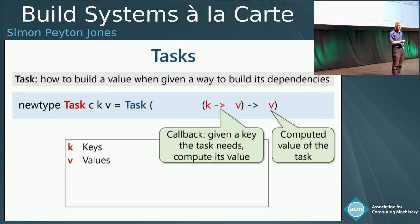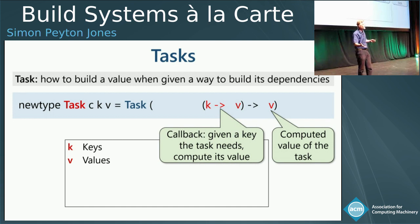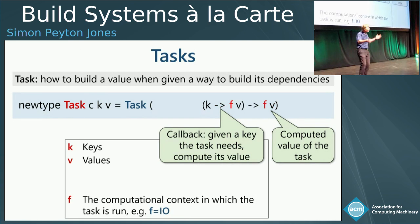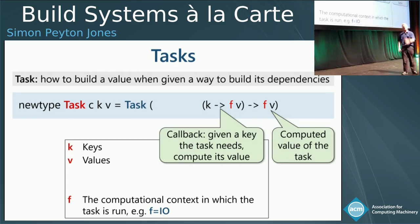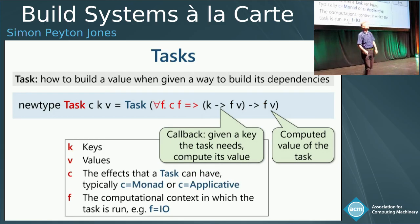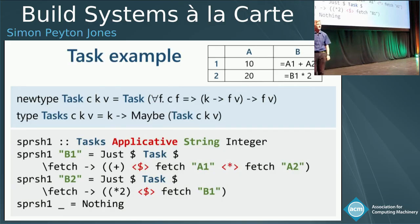What is a task? This is where things get interesting. A task is a function that produces a value — that's the arrow v part — but in doing so it needs the value of its dependencies. So it needs some kind of k-to-v function, a callback it can use to get the values of its dependencies. But that callback has to be somehow stateful, because fetching the value of another key may require work to bring it up to date — an effectful thing that needs to be recorded. That's reflected by the f. We parameterize by saying any f will do, provided it satisfies constraints c.